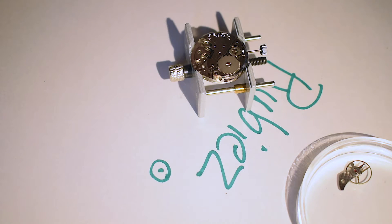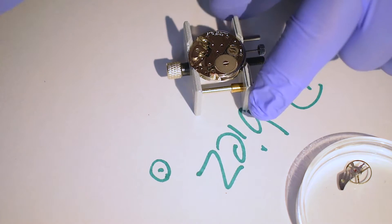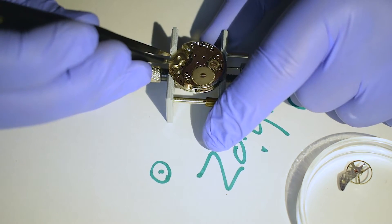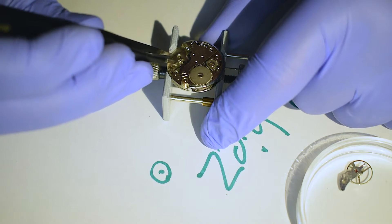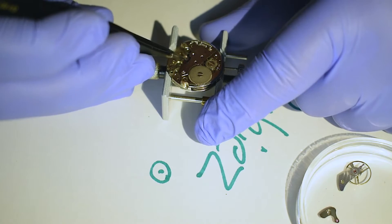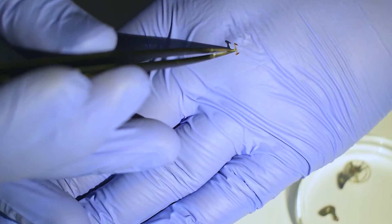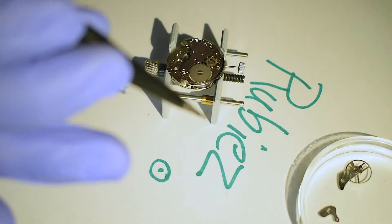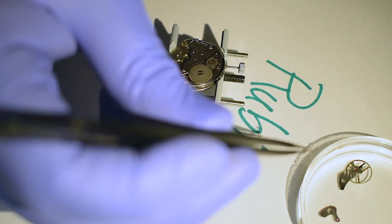Now the next thing that we want to remove is the pallet fork. You can very simply remove this bracket and you can remove the pallet fork. This tiny piece is what actually regulates the escapement of the motion.